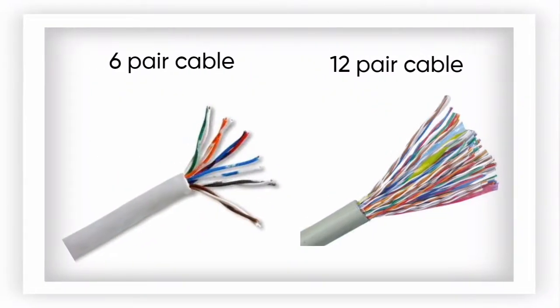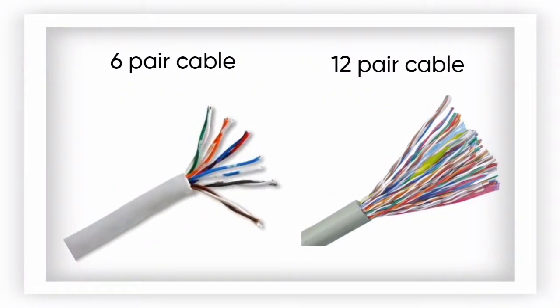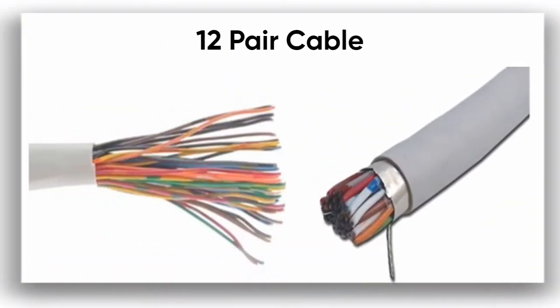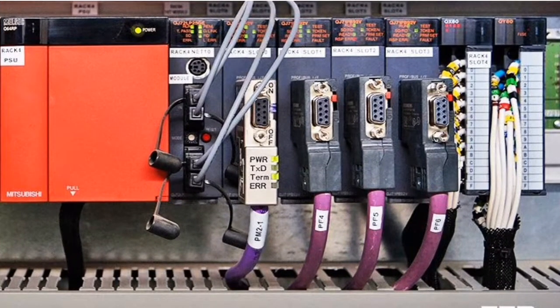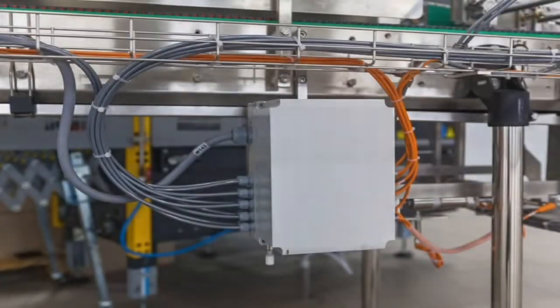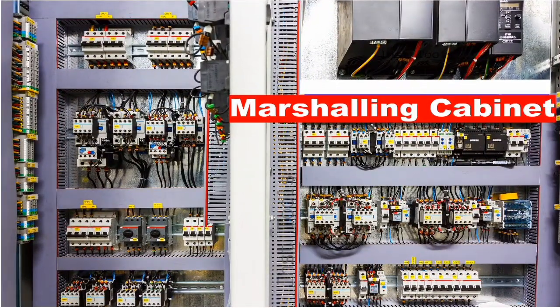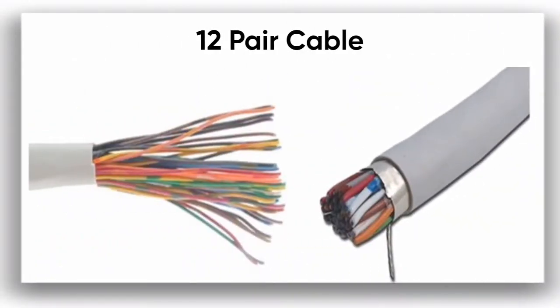So at least a six-pair or 12-pair cable is best suited for our requirement. We choose a 12-pair cable, which is nothing but a main cable or home run cable, as it interfaces the field junction box and the marshaling cabinet in the control room. So finally, one big main cable is required for our purpose.